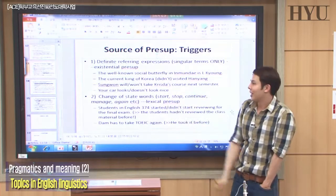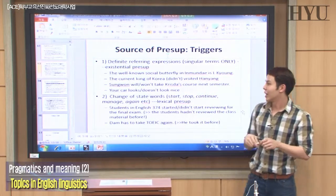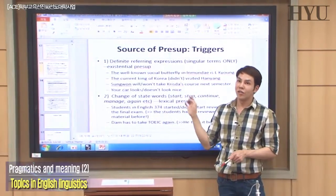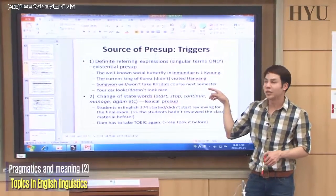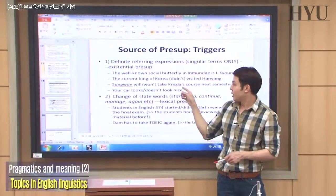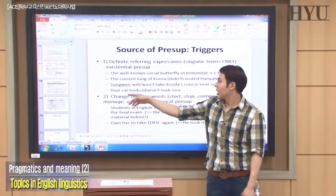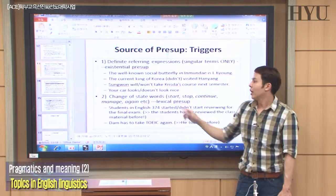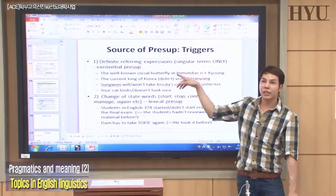'The current king of Korea visited Han Yang' — the 'the' presupposes that the speaker believes the king of Korea exists. 'Seung-wan won't take Krista's course next semester' — whether positive or negative, it presupposes Seung-wan exists because it's a definite expression. Or 'your car looks nice' — the speaker presupposes the listener has a car. We call that existential presupposition.